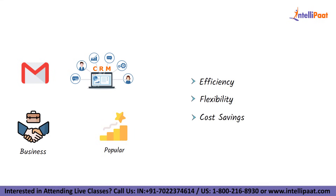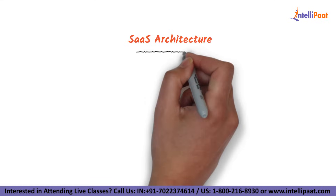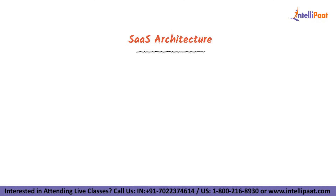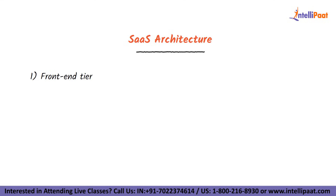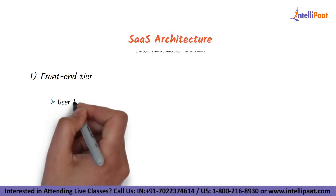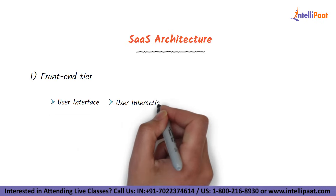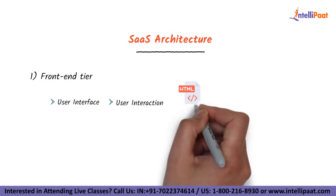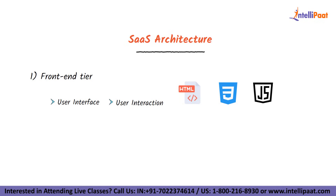Let us now understand what is the SaaS architecture. The SaaS architecture is built on a multi-tier model, which includes the front-end tier. This tier is responsible for presenting the user interface and handling user interactions. It typically consists of HTML, CSS, JavaScript, along with other front-end frameworks and libraries.